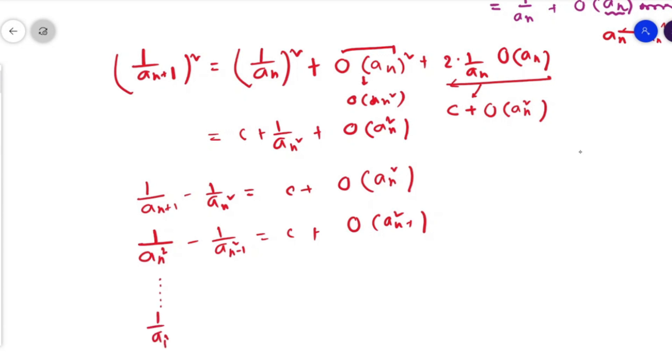Now let's add them up to get the following thing. This thing should cancel out, so 1/a_{n+1}² - 1/a_0² = (n+1)·c + O(Σ_{r=1}^n (1/r²)).